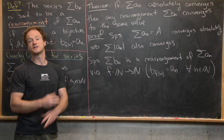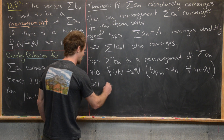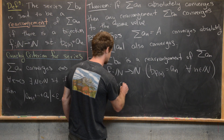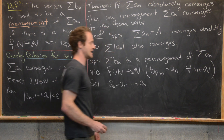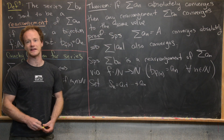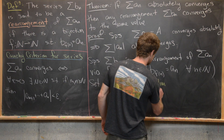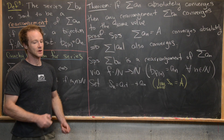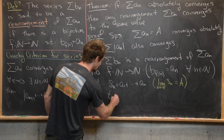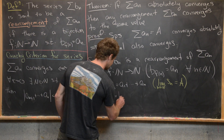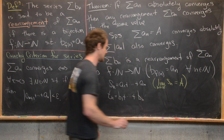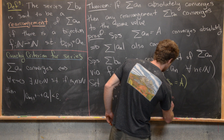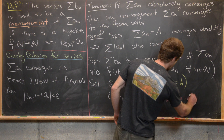For more parts of our setup, we set S sub N equal to the partial sum of the series A sub N — so that's A_1 plus all the way up to A_N. Since the sum of the A_N terms equals capital A, that is equivalent to saying the limit as N goes to infinity of the partial sums S_N equals A. We also set T_N equal to the partial sum of the B_N terms, which is B_1 all the way up to B_N. We want to show that the limit as N goes to infinity of T_N equals A as well.